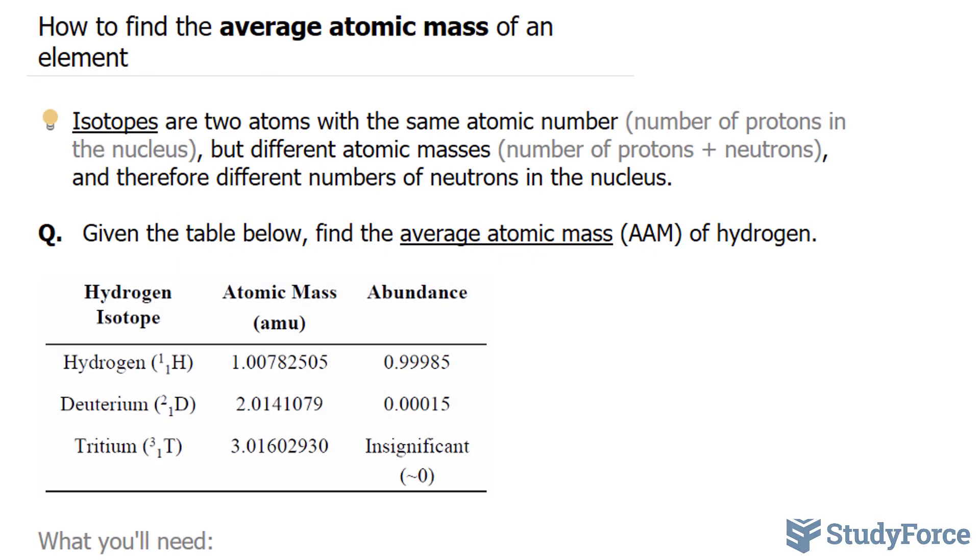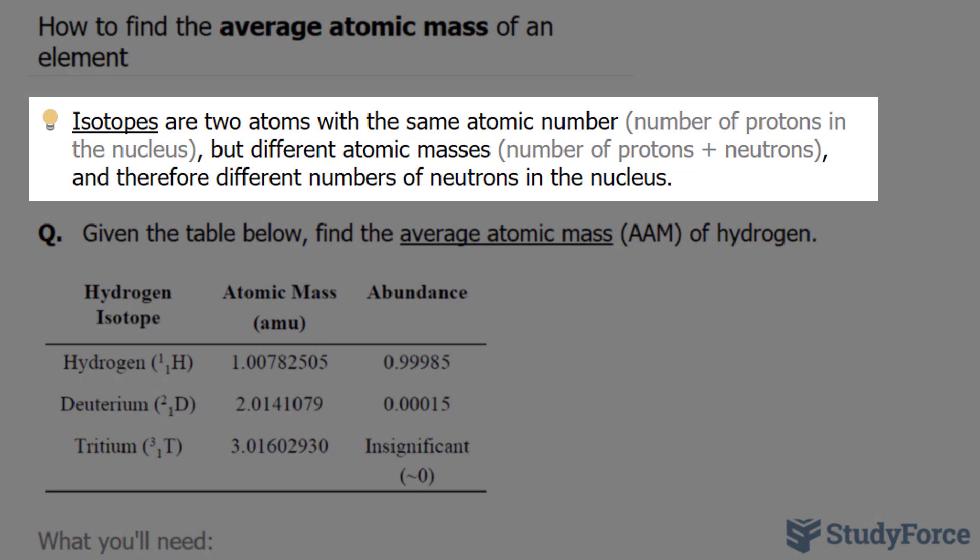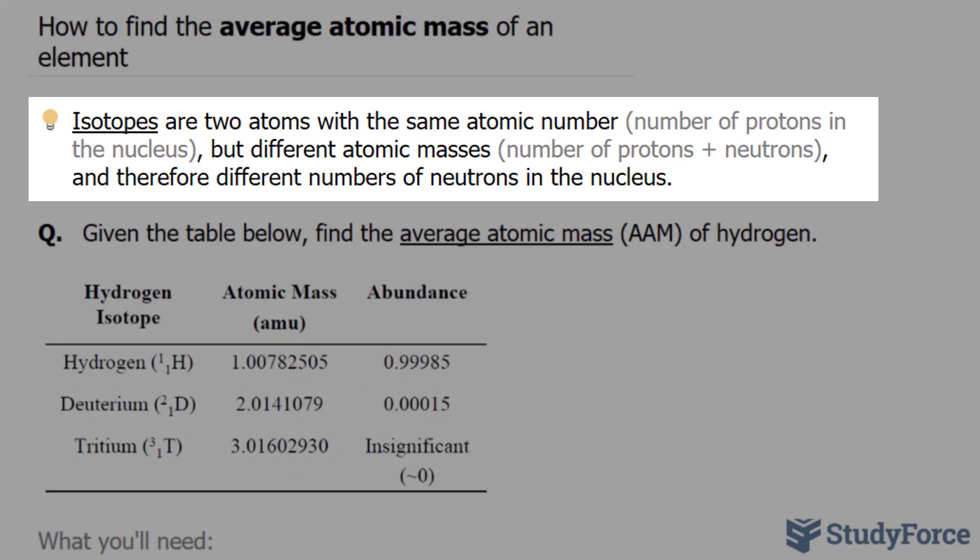In this video, I'll show you how to find the average atomic mass of an element. Let's start by defining a key term. Isotopes are two atoms with the same atomic number, which means the number of protons in the nucleus, but different atomic masses. An atomic mass is the combination of protons and neutrons, and therefore, different number of neutrons in the nucleus.